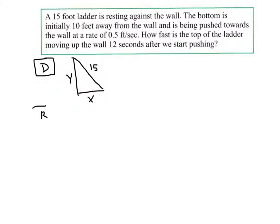Alright. The rates. Well, the rate that I know is dx dt. Because this thing is being pushed towards the wall. Now, it's a little bit tricky here. As this thing is being pushed in, the length of x is decreasing. Therefore, dx dt is negative 0.5 feet per second. Okay. So, we've got to be careful with that. We want to make sure that we see that it's negative.